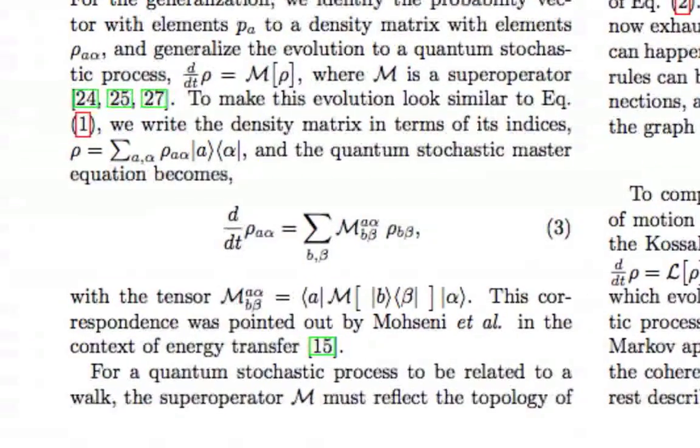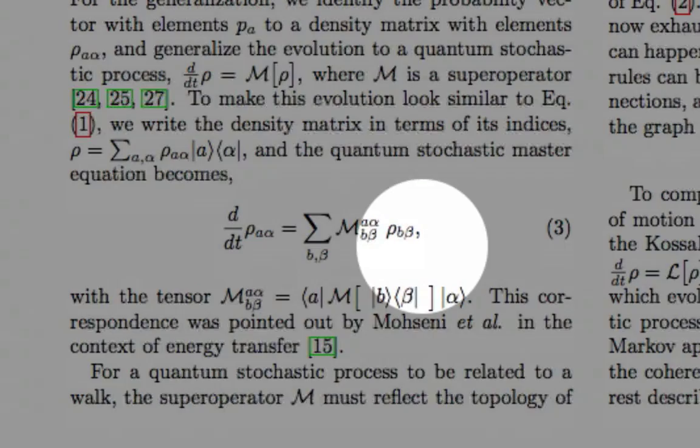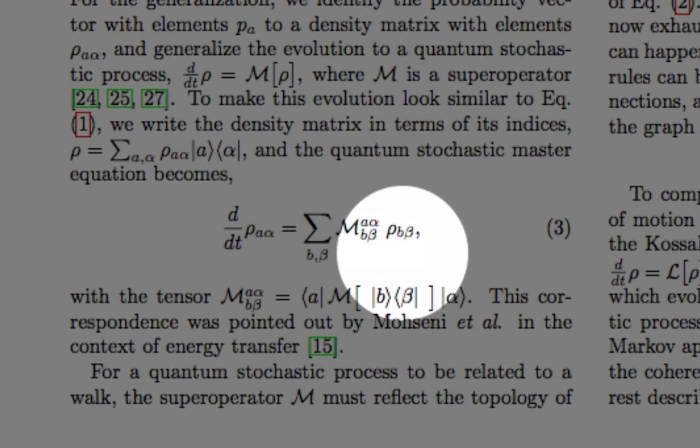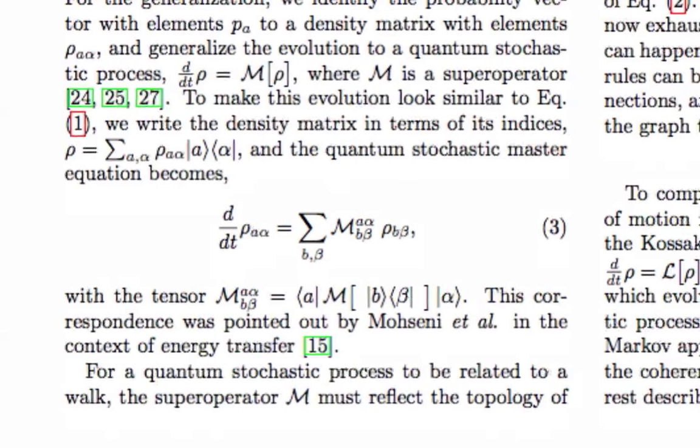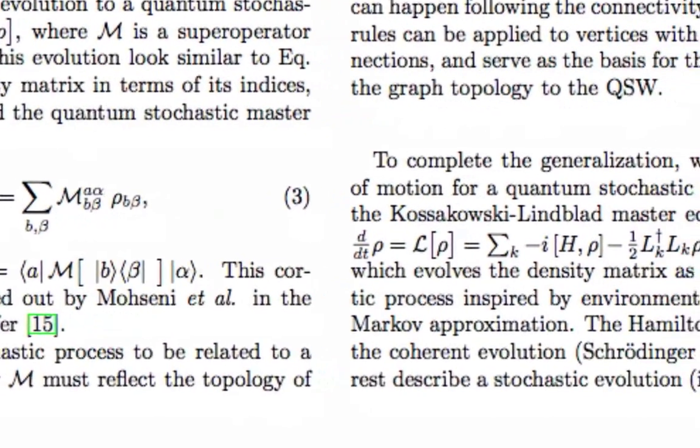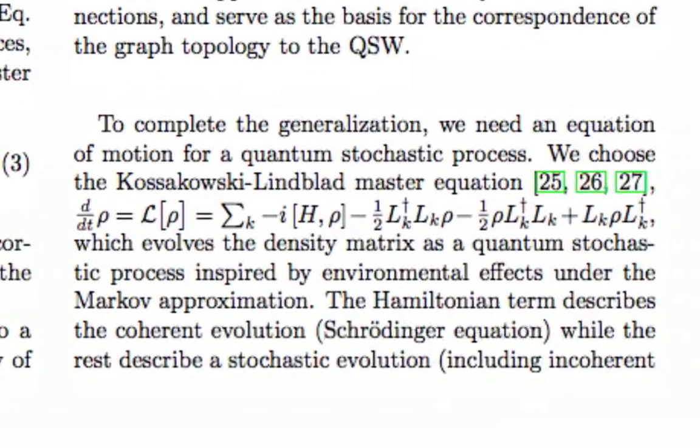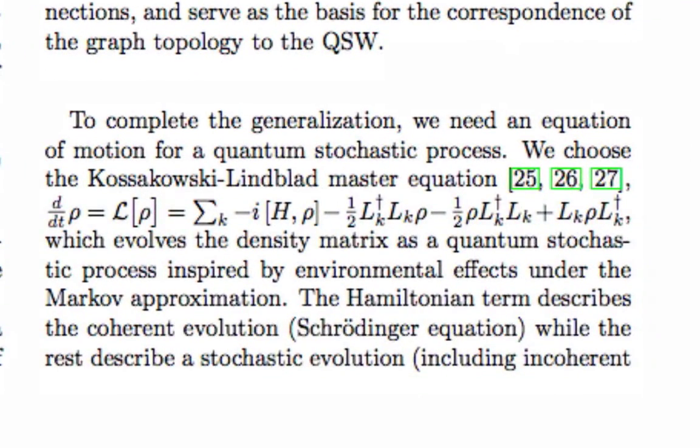We wanted this test to have an analog from the probability vector to the density matrix rho that evolves according to a quantum stochastic process with the matrix curly M. This quantum stochastic matrix we decided to evolve according to the Kossakowski-Lindblad Master equation, which is a Markovian Master equation.